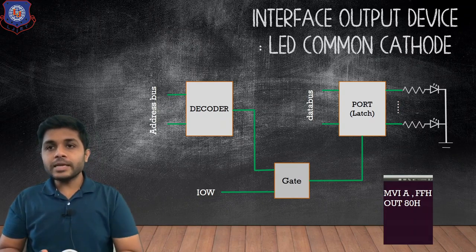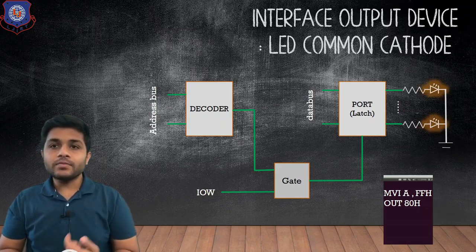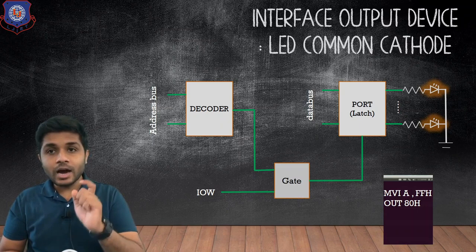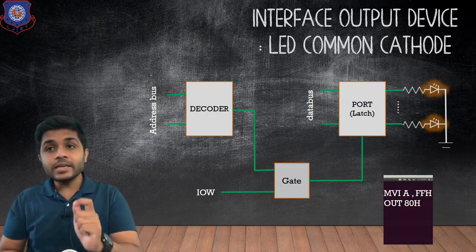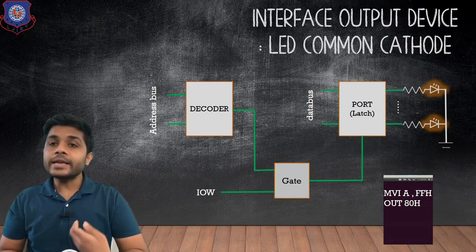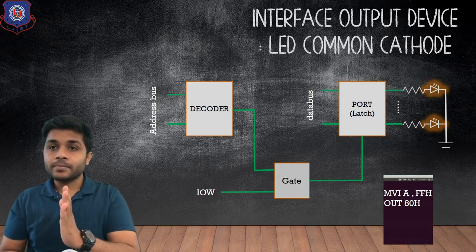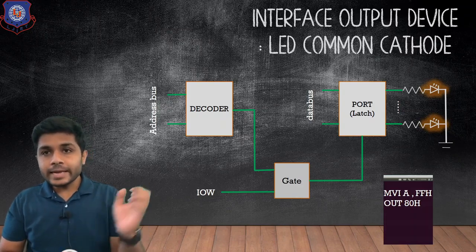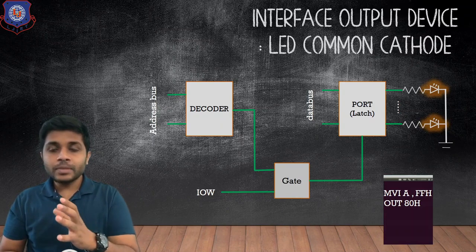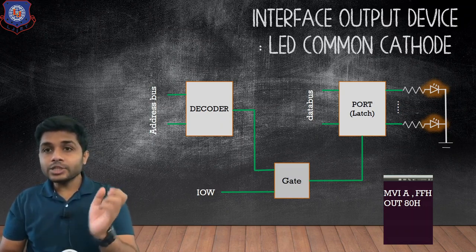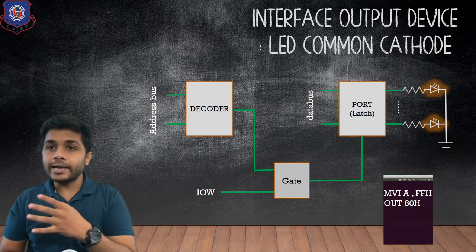If you send all ones to eight LEDs connected to the port, all the LEDs will glow. When this program is executed all the LEDs will glow. Now because we have used latch as the output port, the LEDs will keep glowing. Whenever we send any data to the latch, the latch will store that data until we reset it. So the latch keeps sending 1 to the LEDs and the LEDs keep glowing.